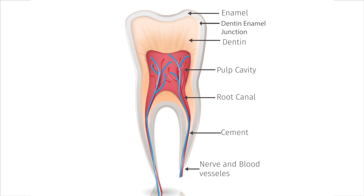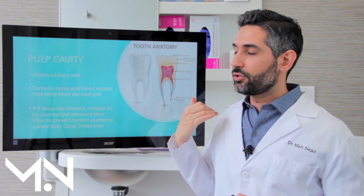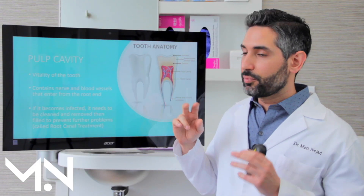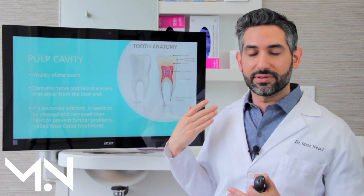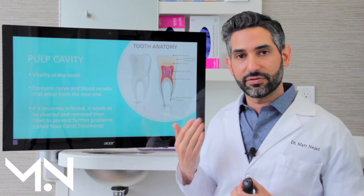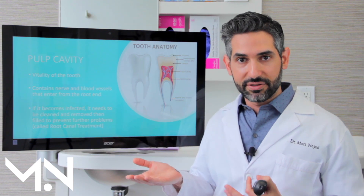The last layer of the tooth I want to talk about is the pulp cavity. The pulp cavity is the deepest layer inside — so you have your enamel, your DEJ, your dentin, and then as you work your way down to the red area, you get to the pulp cavity. The pulp cavity is the vitality of the tooth — it's what gives the sensory nerves, the blood flow, and all that to the tooth, which makes the tooth alive.